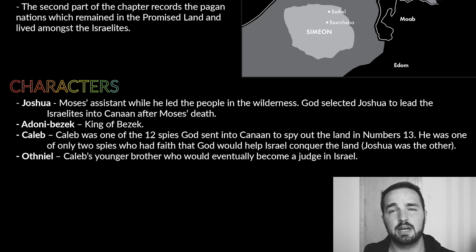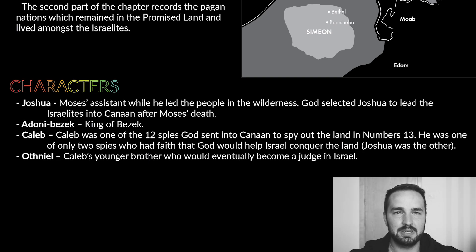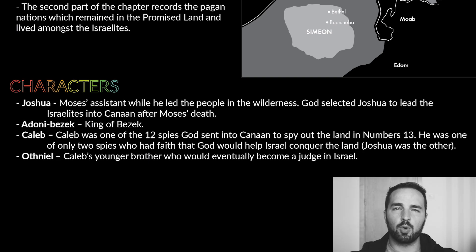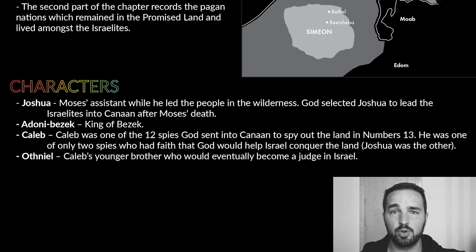The next character is Adonibezek, who was the king of Bezek — we'll talk about him more in the outline. Caleb is next. Caleb was one of the 12 spies that Moses sent into the land of Canaan. He was one of only two spies who brought back a good report, saying that God would give the Israelites victory over the Canaanites if they went in to conquer the land. Joshua was the other spy who gave a good report. The others were unfaithful, and that's why the people had to wander in the wilderness for 40 years.